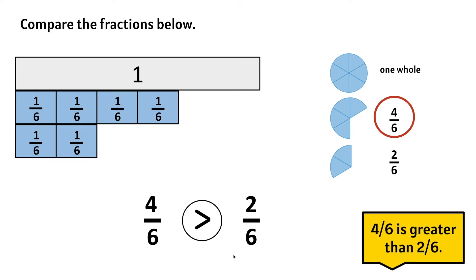We notice that when we have fractions with the same denominator, we can look at the numerator to distinguish which one is larger. The 4 is larger or greater than the 2. So 4 sixths is greater than 2 sixths.